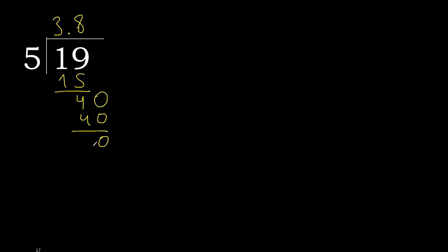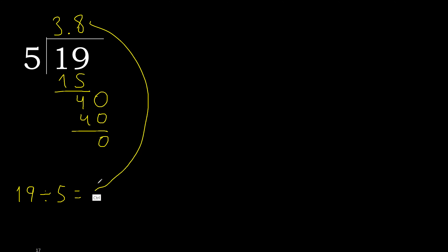0. Therefore finish. Therefore 19 divided by 5 — finish: the result is 3.8.